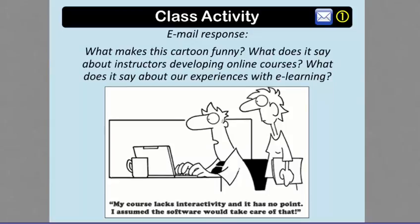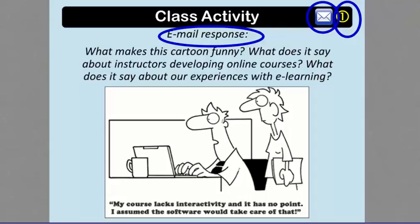During this workshop, there are two identified class activity questions for you to respond to in an email. Since everyone will be doing this workshop at various times and can't respond during the session, you'll just email me the responses. The identified email response questions have the email symbol at the top of the page, as well as the words 'email response.' Since there are two activities, they are numbered. You should compile your responses to both prompts in one message and send them to me when you've completed viewing the entire workshop.